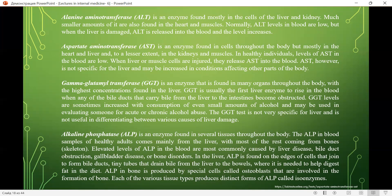Alkaline phosphatase (ALP) is an enzyme found in several tissues. In healthy adults, ALP in blood comes mainly from the liver with most of the rest from bones. Elevated ALP is most commonly caused by liver disease, bile duct obstruction, gallbladder disease, or bone disorders. In the liver, ALP is found at the edges of cells that form bile ducts — tiny tubes that drain bile from the liver to help digest fat. ALP in bone is produced by osteoblasts involved in bone formation, with distinct isoenzyme forms produced by various tissue types.